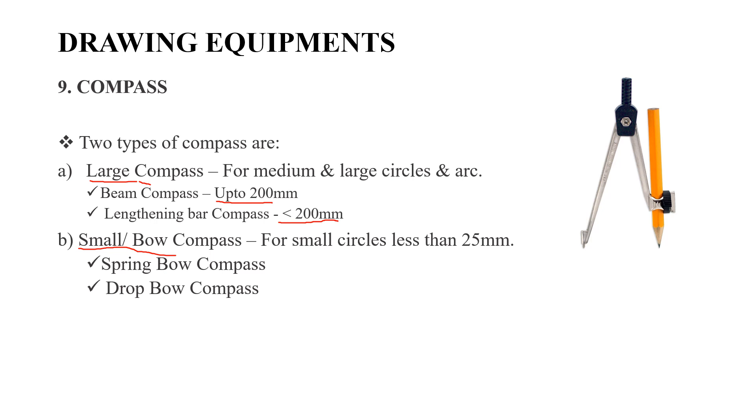Small bow compass is used for small circles less than 25mm. Spring bow compass and drop bow compass are types of small bow compass.